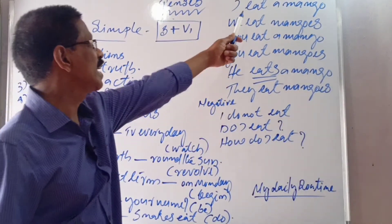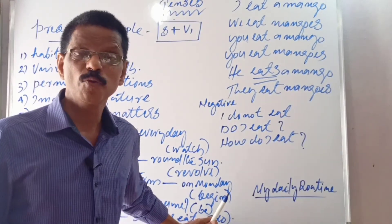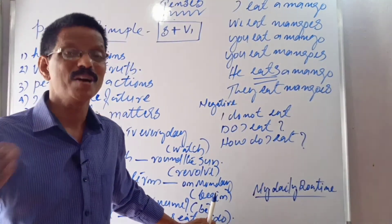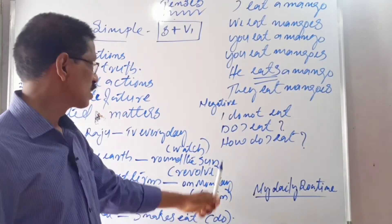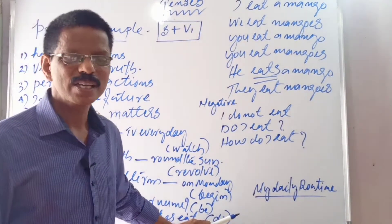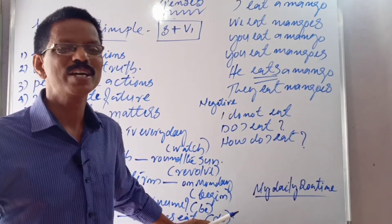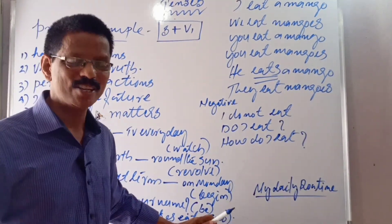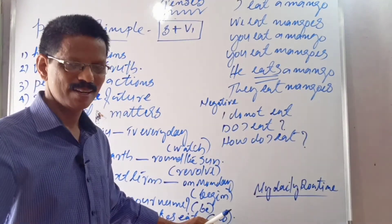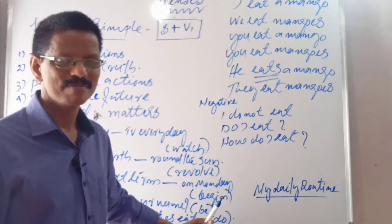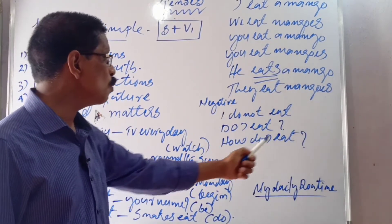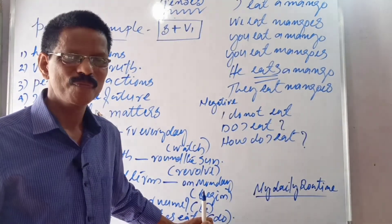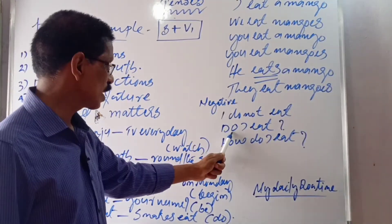If the verb is finite — eat, V1 — in simple tense form, to make a verb negative you use do, does, or did. Questions are of two types: auxiliary question and WH question. Do I eat? Does he eat? Do they eat? Do you eat? — auxiliary questions. How do I eat? How does he eat? When does she eat? — WH questions. You can make both types of questions from present simple.